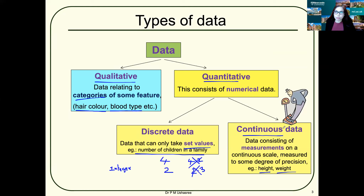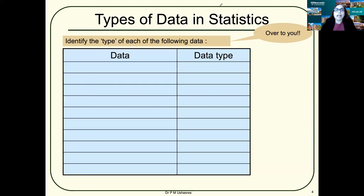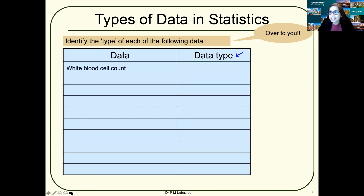Now let's take some examples. I have a table with two columns. In the first column I'll give you some data; in the second column you have to identify the type of data. Is it qualitative or quantitative? And if it is quantitative, is it discrete or continuous? Let's start with white blood cell count — what type of data is it?